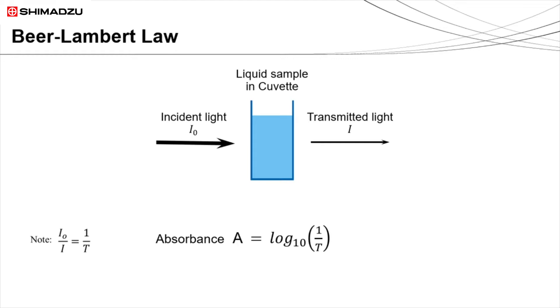The relationship of absorbance to concentration is given by Beer-Lambert law. It can be expressed as shown in the equation, where A is the absorbance, L is the optical path length, that is the length of the cuvette cell, C is the concentration of the analyte, and E is the molar absorptivity or extinction coefficient, which is constant for a particular analyte at a specific wavelength.